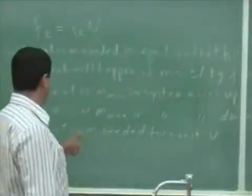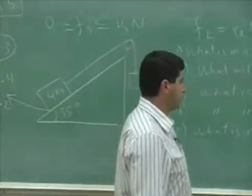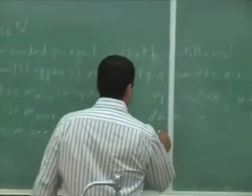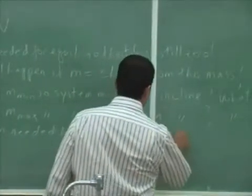What is the, I'll write it this way. What is M needed for constant velocity once system moves?